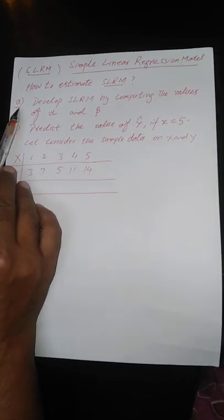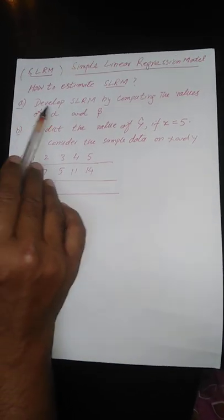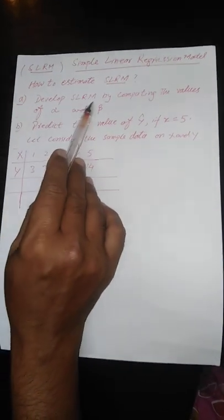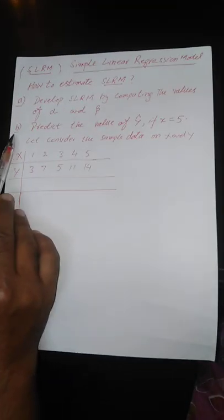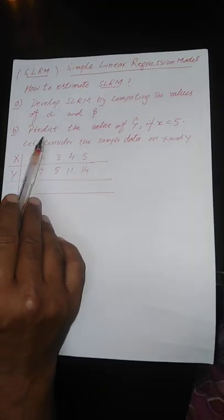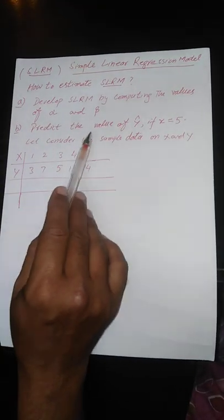In Part A, we develop the simple linear regression model by computing the values of alpha and beta. And in Part B, we predict the values of y if x is equal to 5.